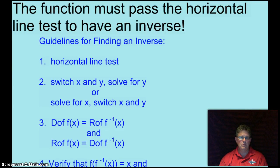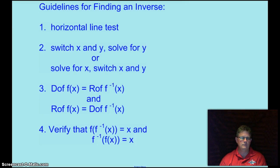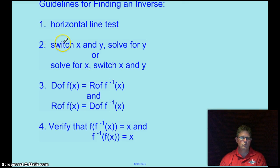the function must pass the horizontal line test to have an inverse because if it can't pass the horizontal line test when you reflect it in the line Y equals X then it won't be a function because it won't pass the vertical line test. So function must pass the horizontal line test to have an inverse. Guidelines for finding an inverse number one, check and make sure it passes the vertical line test. Two, switch X and Y and solve for Y or